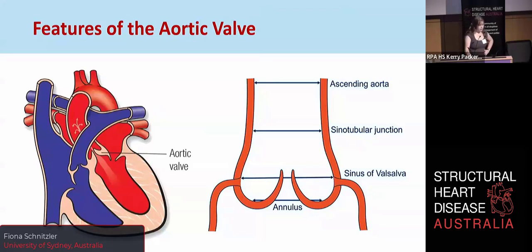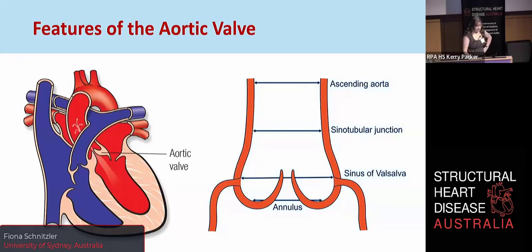It's also important to consider the arrangement of these valves. The mitral valve is intraventricular, and the aortic valve is just above that in the aorta itself. They're not actually in a 180 degree plane — they're slightly offset at about 135 degrees. This is particularly important for the LV outflow tract, which I'll talk about soon. The features of the valve itself include the annulus and the sinuses of Valsalva, which end at the sino-tubular junction before going up into the ascending aorta.